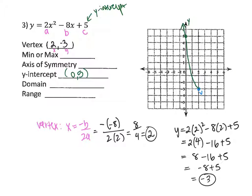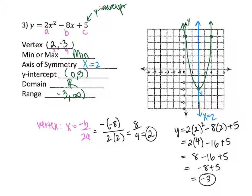The axis of symmetry cuts through the vertex at x = 2. The y-intercept is two units away from the axis of symmetry, so I reflect it two units to the right. Connecting the lines, the parabola opens up. The vertex is a minimum — the lowest point. Domain is all real numbers, and the range is [−3, +∞), since the lowest y-value is negative three.